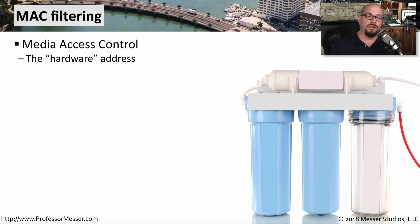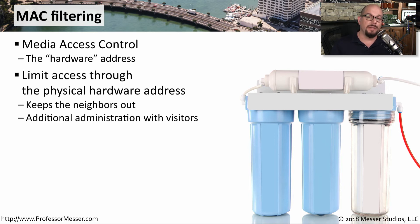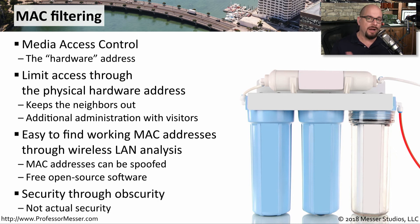We spoke in an earlier video about performing MAC filtering on a wired network, but you can also filter on a media access control address on a wireless network. You would normally define all of the allowed devices' MAC addresses in your access point, which would prevent any other MAC addresses from joining the network. However, you can use a wireless analyzer to view all MAC addresses communicating on your wireless network, so MAC filtering may not provide the level of security you need. We commonly refer to this as security through obscurity, which is effectively no security at all.